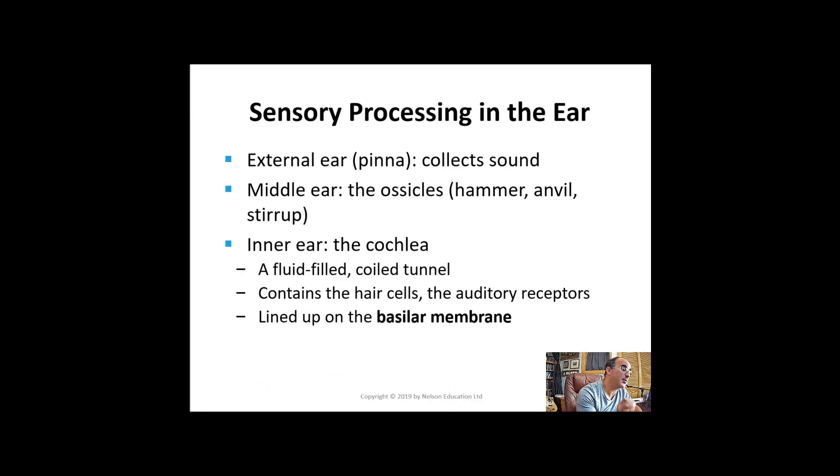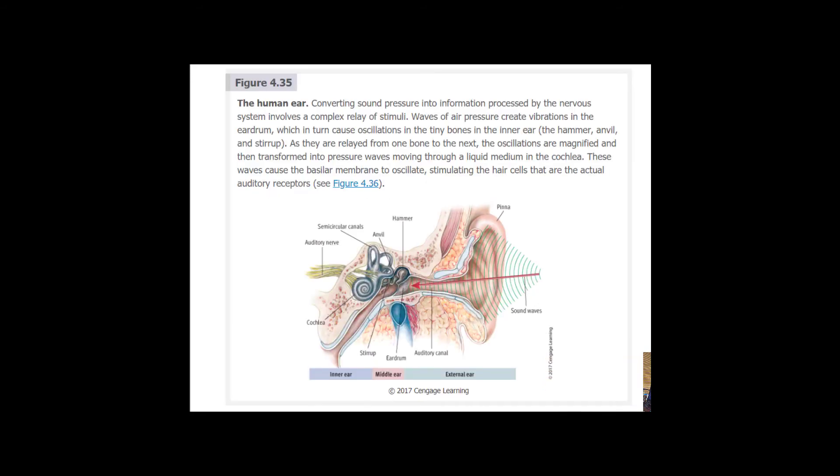The ear has three divisions. The external ear consists of the pinna, which collects the sound. The middle ear consists of the mechanical chain made up of the three tiny bones in the ear: the hammer, the anvil, and the stirrup, known collectively as ossicles. The inner ear consists of the cochlea, a fluid-filled coiled tunnel that contains the hair cells, the auditory receptors. The hair cells are lined up in the basilar membrane.